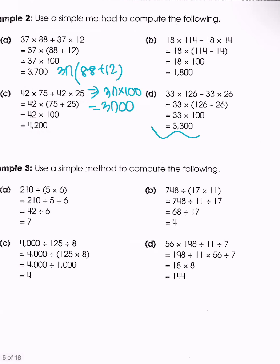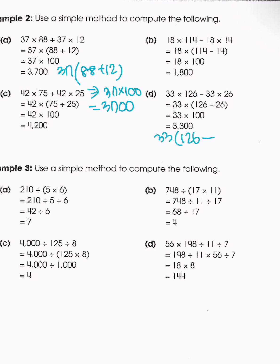Now let's try the next example. Again we see two products but now we have subtraction. So we group it into 33 times (126 minus 26), which gives 33 times 100 = 3,300.